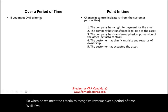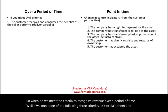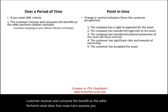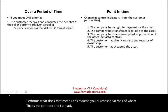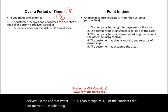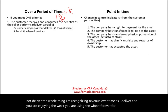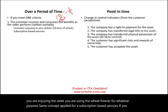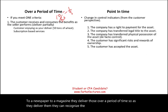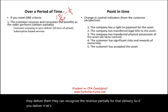So when do we meet the criteria to recognize revenue over a period of time? If we meet one of the following three criteria. First: the customer receives and consumes the benefit as the seller performs. For example, if you contracted 50 tons of wheat and I've already delivered 10 tons, I can recognize one-fifth of the contract. I'm recognizing revenue over time as I deliver and you are using the wheat. The same concept applies to subscription-based services — if you subscribe to a magazine, they can recognize revenue partially as each issue is delivered, so one-twelfth of the revenue per month.